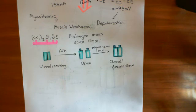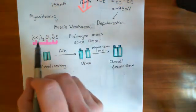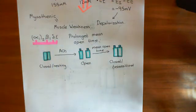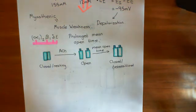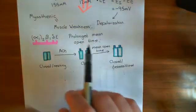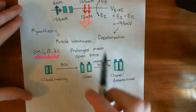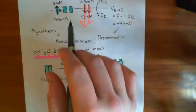In slow channel syndrome mutants, the mutation in one of the four subunits that make up the nicotinic acetylcholine receptor results in this mean open time being hugely increased — it will take a lot longer to go from the open to the closed/desensitized state, so it will remain open for much longer. This allows much more current to move into the skeletal muscle cell, and one effect is that it results in multiple action potentials firing.